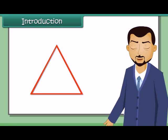Now a question arises: whether four measurements would be sufficient to draw a unique four-sided closed figure, namely a quadrilateral. As a quadrilateral has eight parts, we need to know at least five parts to draw a quadrilateral.